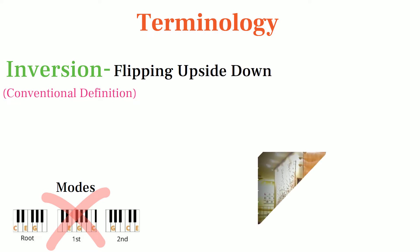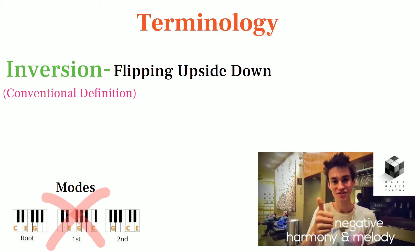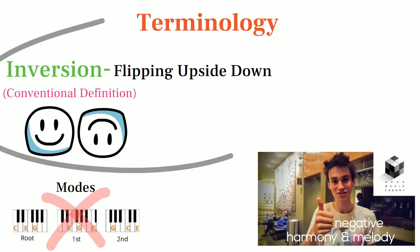When Jacob Collier talks about negative harmony, he's referring precisely to inversion. We're avoiding the trendy name and misleading definition and sticking with the conventional meaning of inversion, which means to flip something upside down.